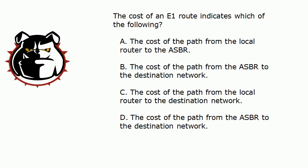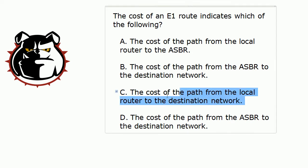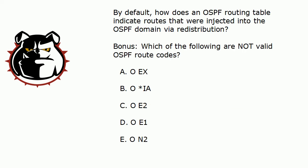That gives you a hint about E1. What does an E1 route indicate? That indicates the cost of the entire path — the cost of the path from the local router to the destination network.